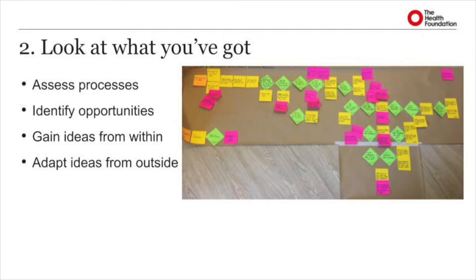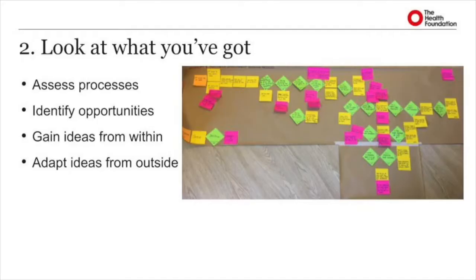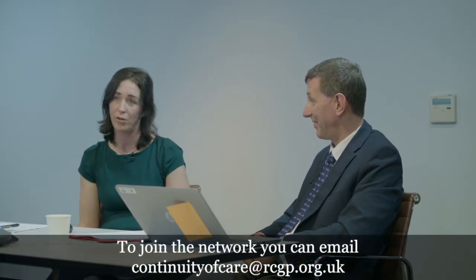Looking at what you've got is also really key. Improvements shouldn't be a bolt-on; they need to be part and parcel of what you do for them to be maintained and sustainable. It's good to look at your processes already in place — a process map is a really good way to look visually at what you do. That can help you identify opportunities to reduce waste, increase efficiencies, and find opportunities where continuity can happen. Use your resources, use your staff. Those on the front line are really key for generating ideas, and you're more likely to get them to change if it's their ideas and they own them.